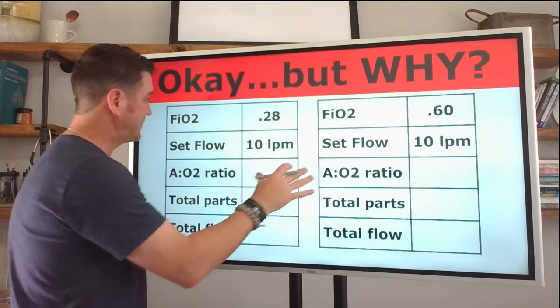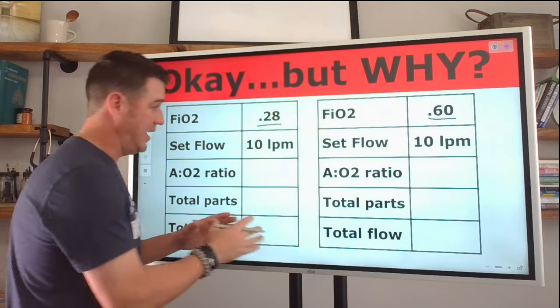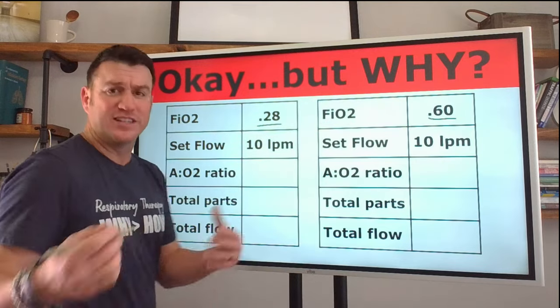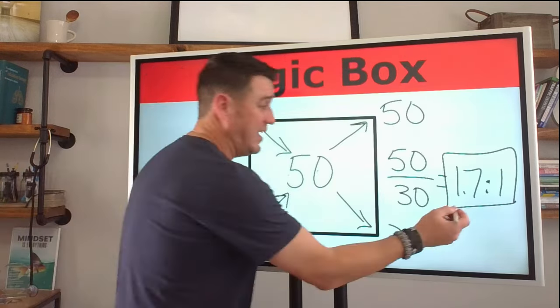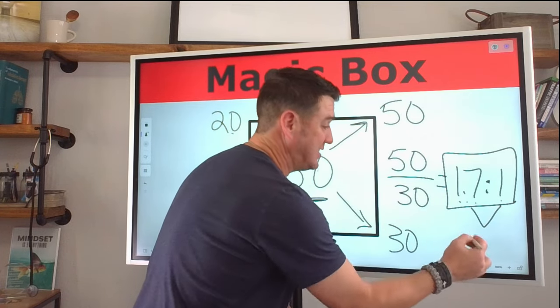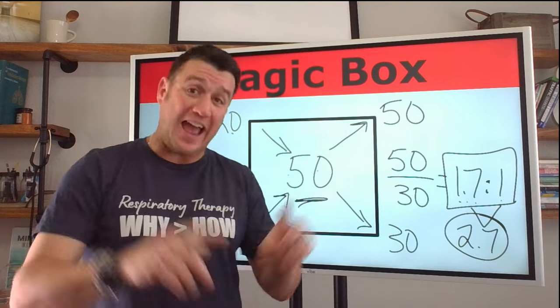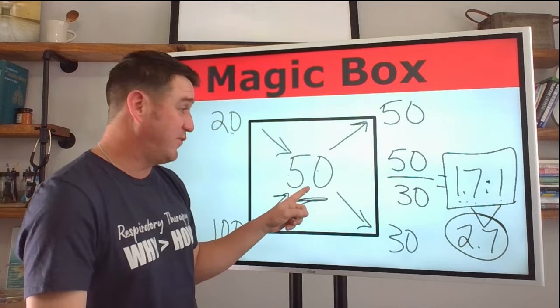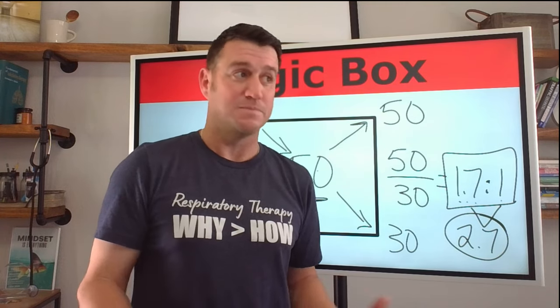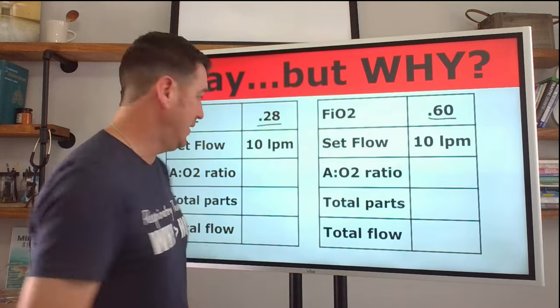We got two scenarios here. FiO2 of 28% and an FiO2 of 60%. Now work these problems out. What I want you to do is figure out the air to oxygen ratio for both of these, the total parts for both of these, and then the total flow. Now to get the total parts, you just come over here and you say, okay, if 50% is an air to oxygen ratio of 1.7 to 1, then my total parts, add these together are 2.7. That's total parts. That means that every one liter is actually 2.7. So if we're on 10 liters at 50%, then our total flow is going to be 2.7 times 10. It's going to be 27 liters per minute. So come back here and work through this, pause this video, then come back.